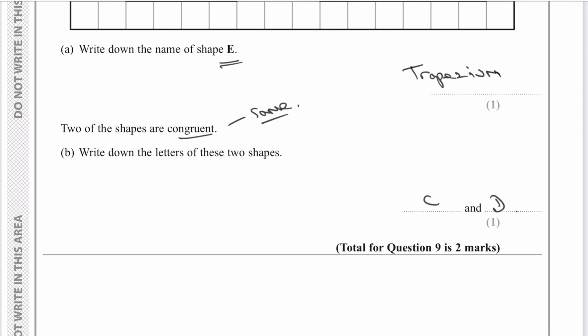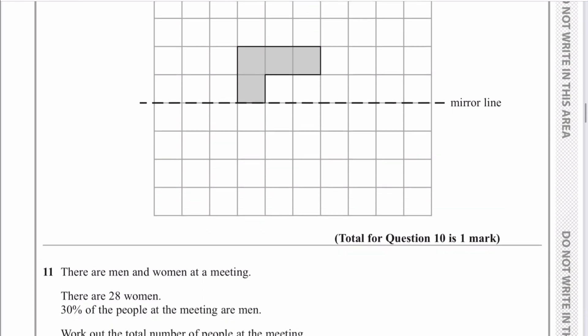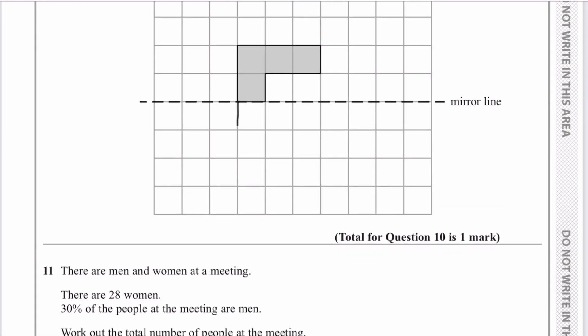Question ten: on the grid, reflect the shaded shape in the mirror line. What we're doing is drawing a shape which is a reflection of the L shape shown. We would just draw the reflected version like this. If you wanted to crosshatch it to show that you mean that shape, that would be perfectly fine as well.